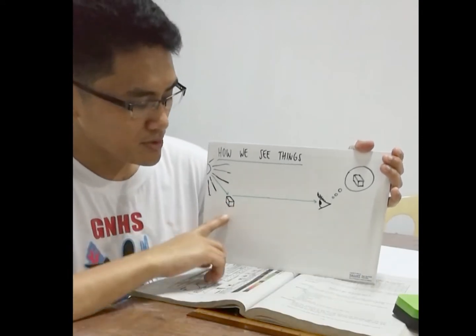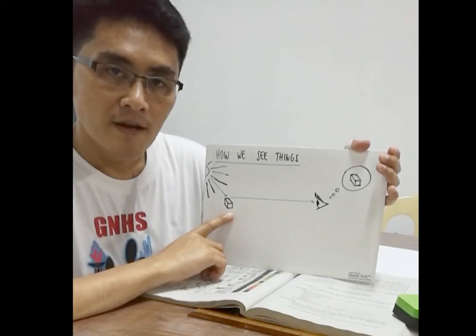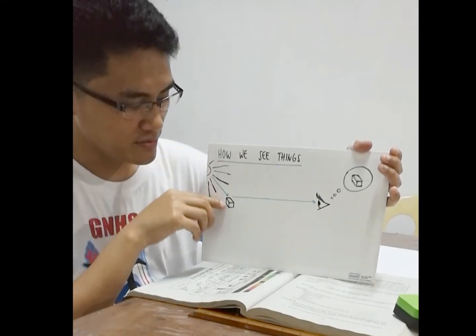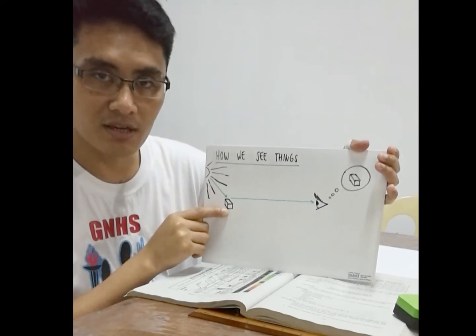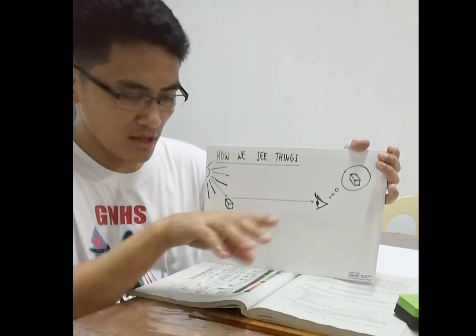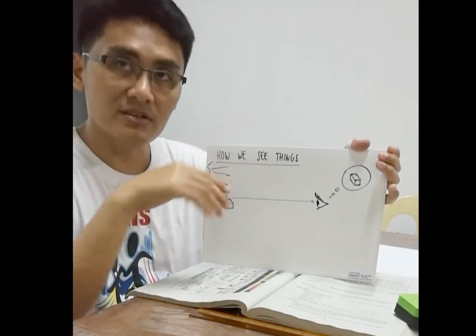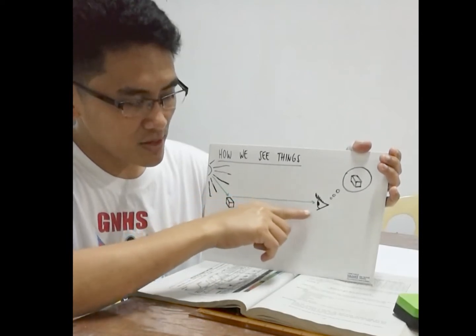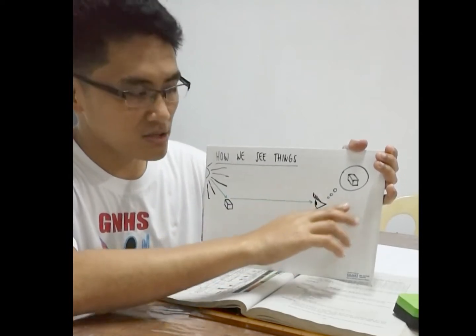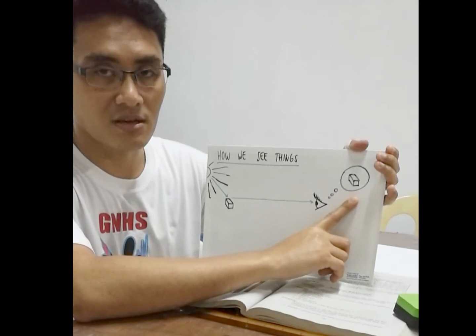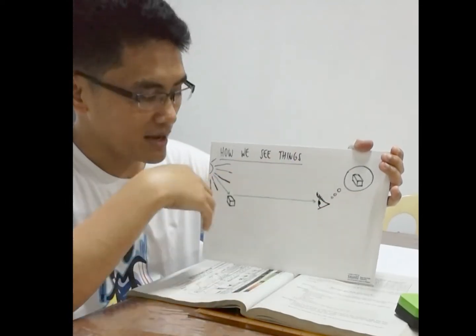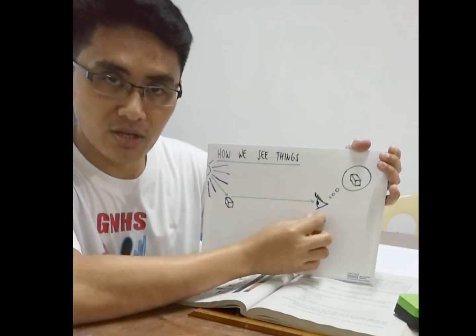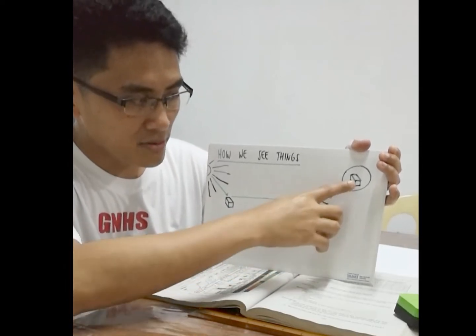So when you have an object such as this, usually we have a light source like the sun from the outside, and the light rays from the sun hit that object. Because of diffused reflection, the light rays are scattered in different directions. If you happen to be here, one of the light rays could find its way into your retina, be processed by your eye, and your brain will tell you that you see the object. It's all about light rays entering your eyes, carrying information about what the object looks like.